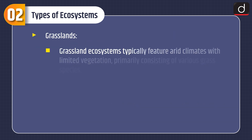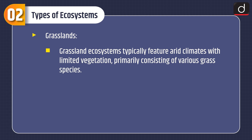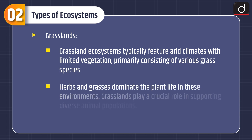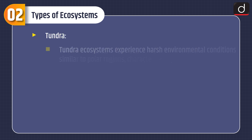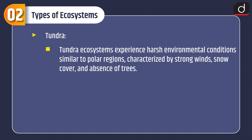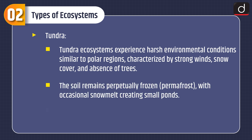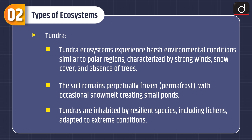Grassland ecosystems typically feature arid climates with limited vegetation, primarily consisting of various grass species. Herbs and grasses dominate the plant life, and grasslands play a crucial role in supporting diverse animal populations. Tundra ecosystems experience harsh environmental conditions similar to polar regions, characterized by strong winds, snow cover and absence of trees. The soil remains perpetually frozen — permafrost — with occasional snow melt creating small ponds. Tundras are inhabited by resilient species including lichens, adapted to extreme conditions.